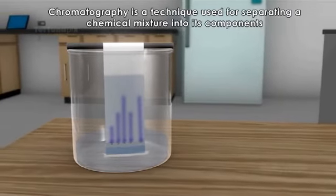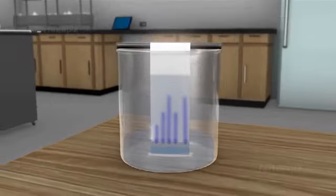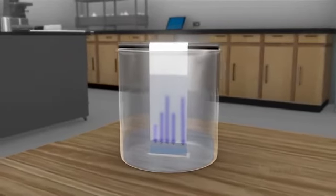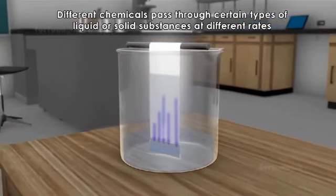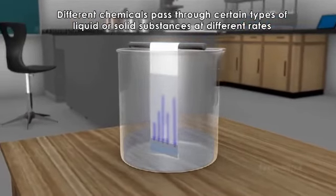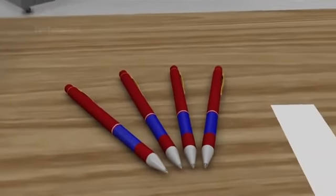Chromatography is a technique used for separating a chemical mixture into its components. Chromatography is based on the fact that different chemicals pass through certain types of liquid or solid substances at different rates.